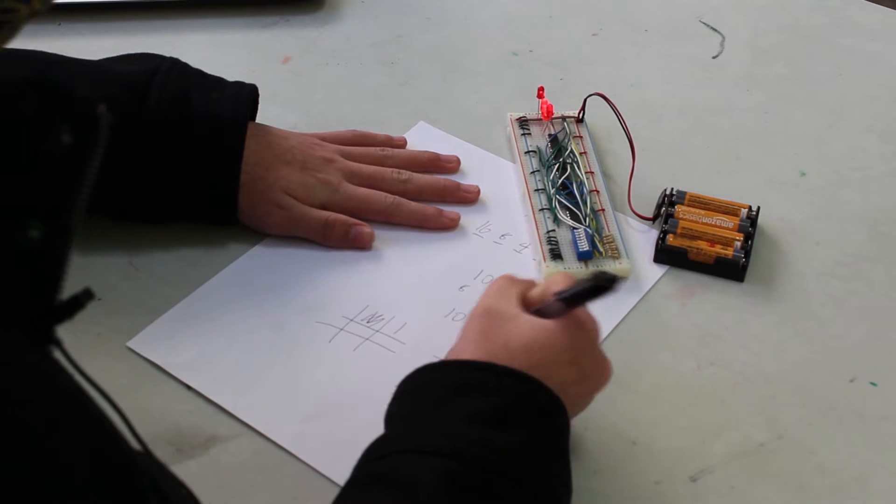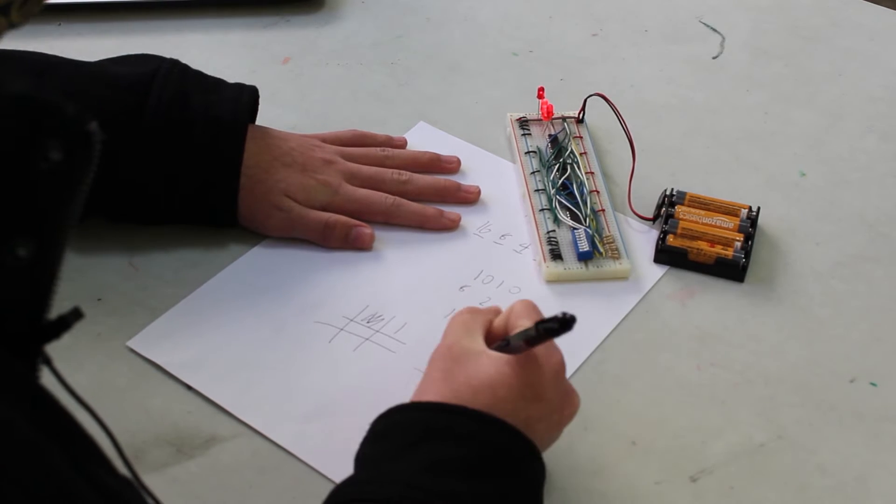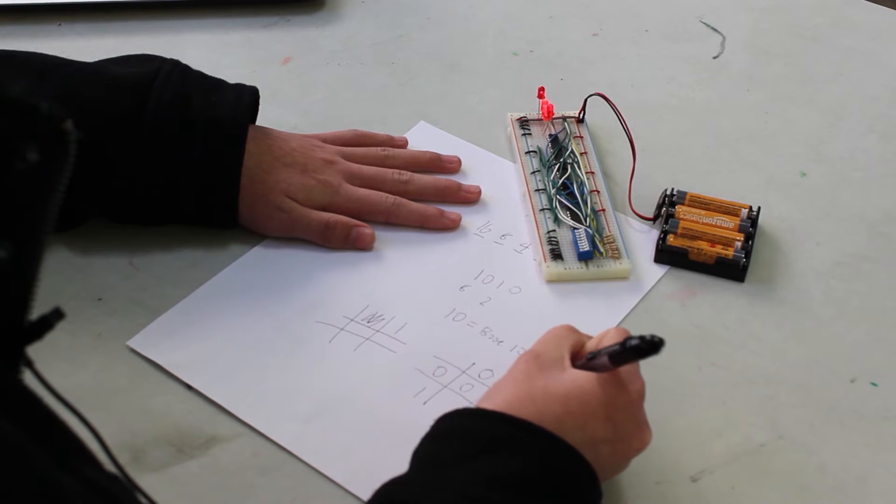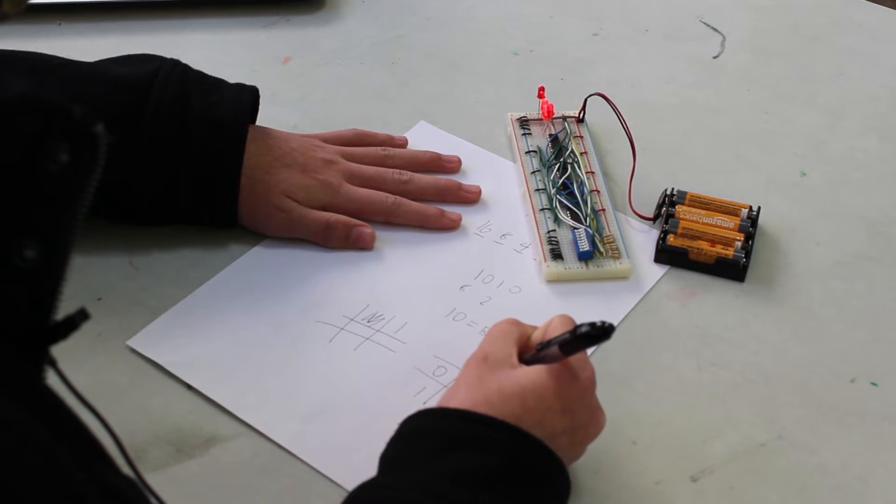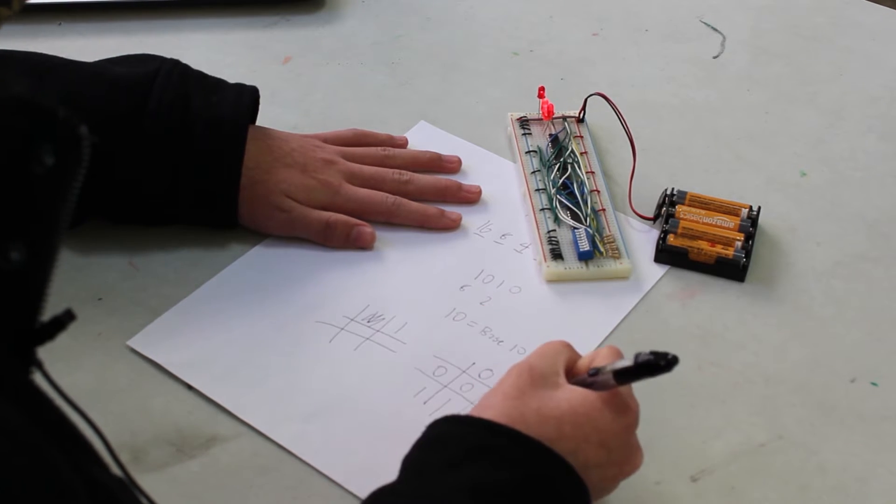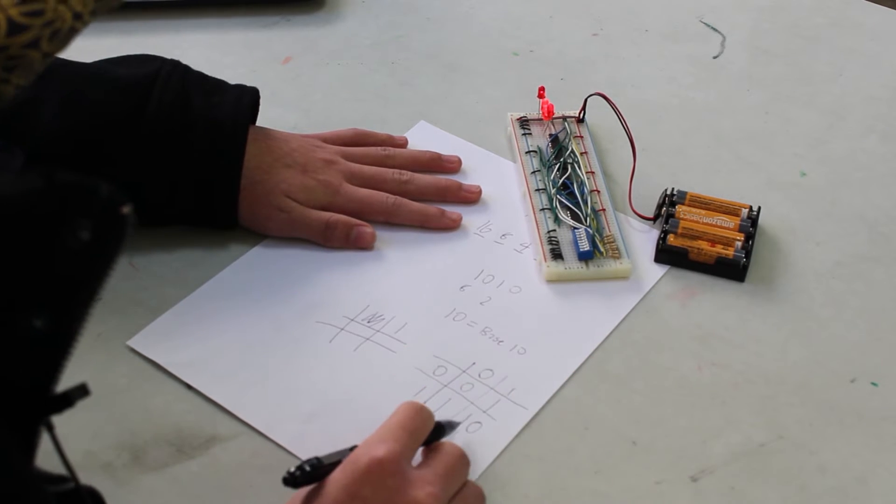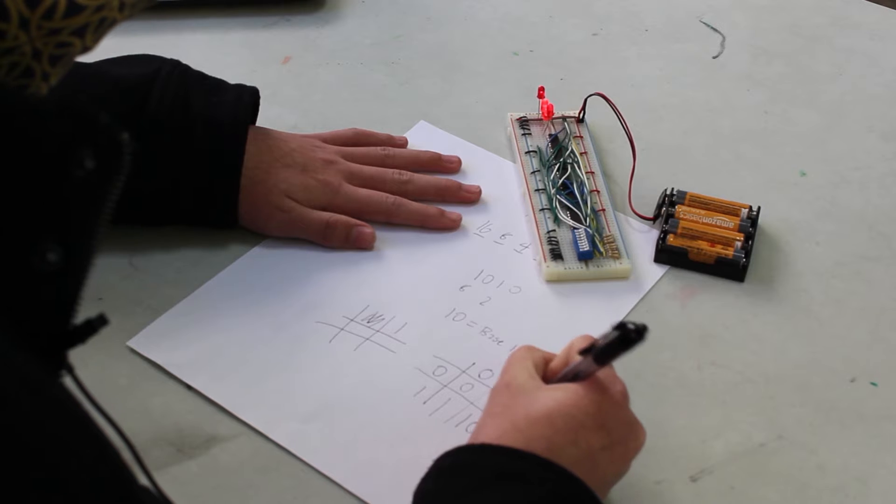But how does this work? 0 plus 0, that's easy, that's 0. 0 plus 1, that's also easy, that's 1. 1 plus 0, that's 1. 1 plus 1, that's actually 1, 0. 1, 0 in binary is 2 in base 10.